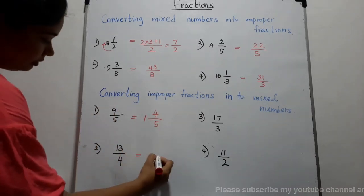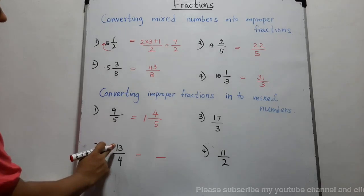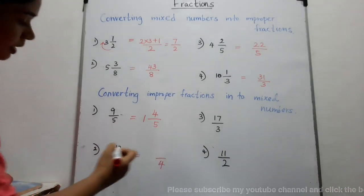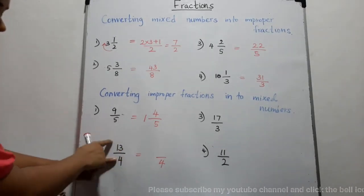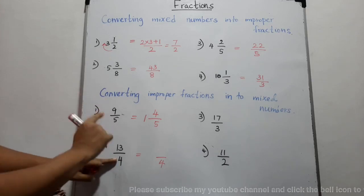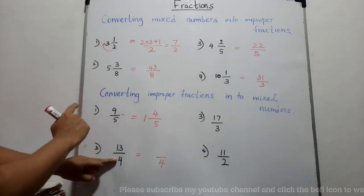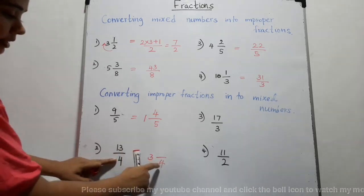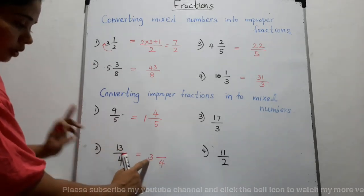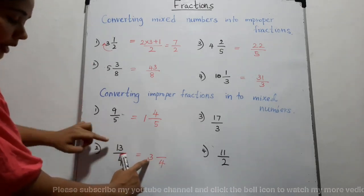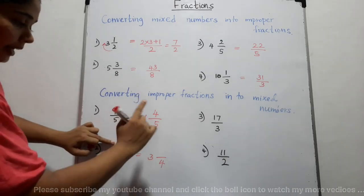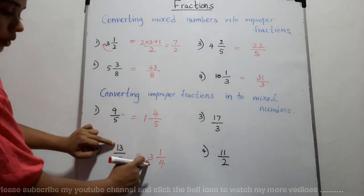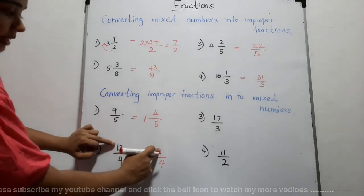Next: thirteen-fourths. Denominator is four. How many fours are there in thirteen? Three — because four into three is twelve. To get thirteen, we add one more. So thirteen-fourths equals three and one-fourth.